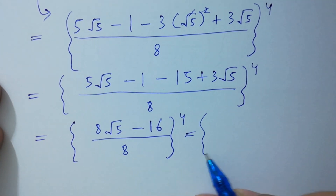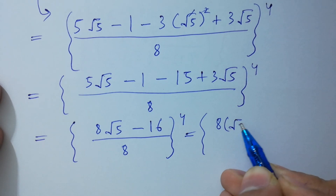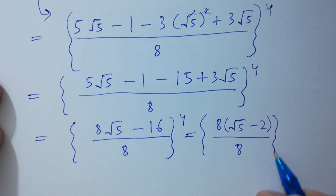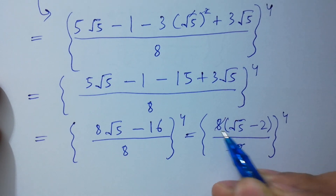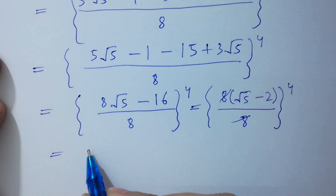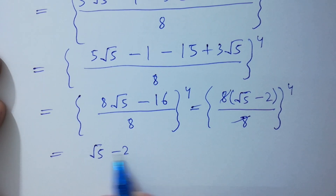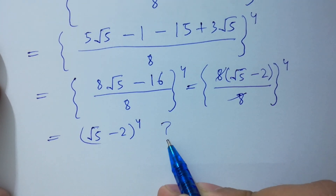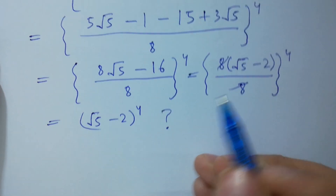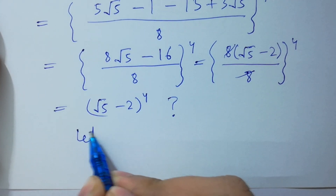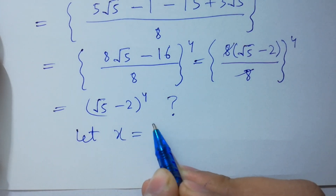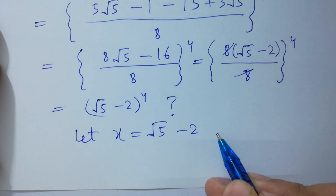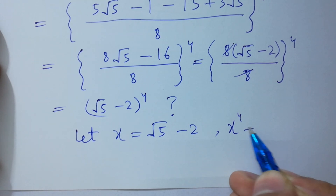Factoring 8 from the numerator gives 8(square root of 5 minus 2) over 8, and the 8s cancel, giving us (square root of 5 minus 2) to the whole power 4. Now the main point is how to solve this.